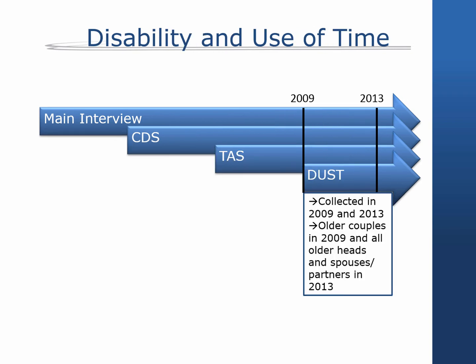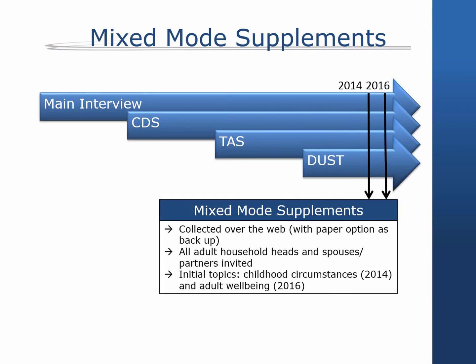In 2009 and 2013, the Disability and Use of Time Supplement collected time diaries of activities along with disability and well-being measures from adults age 60 and older. The study included 400 older couples in 2009 and 1,800 older adults in 2013, with over 5,000 time diaries made publicly available. For the first time in 2014, the PSID used a mixed-mode supplement to collect information from heads and spouse partners, with the web serving as the primary data collection mode and a paper instrument as a backup. In 2014, the mixed-mode supplement focused on child experiences in the Childhood Retrospective Circumstances Study (CRCS), and in 2016 in the Wellbeing and Daily Life Supplement.